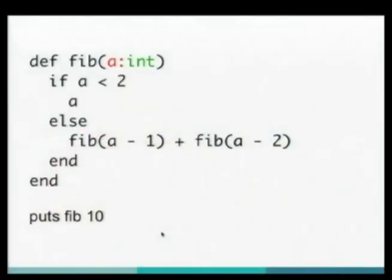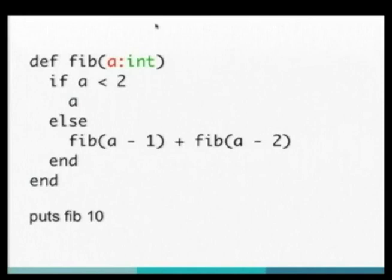So this is what Doobie looks like if you read it. It looks almost exactly like Ruby, except for this highlighted part here. Doobie is statically typed, so you have to declare the type of your method arguments. It goes ahead and infers all the other types from that.